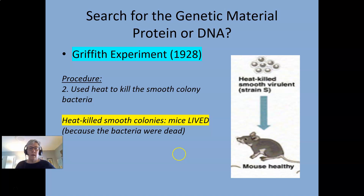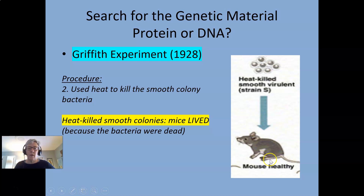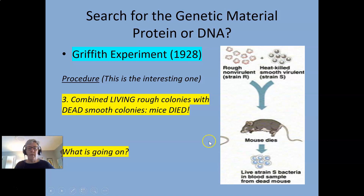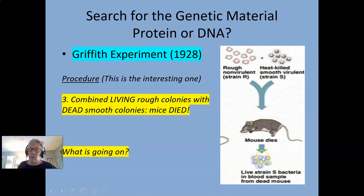Then he heat-killed the S strain — he heated it up, which generally is going to denature proteins — and infected it into the mouse, and the mouse lived. So whatever he did by heating it seems to have removed the virulent properties. Normally the S strain caused the mice to die, but if he heat-killed that S strain, the mice lived — the bacteria were dead. But then, this is the good one: he mixed them together. He mixed the rough strain, which alone does not cause the mice to die, and the heat-killed S strain, which also alone does not cause the mice to die, and the mouse died. Something is going on, because neither of these alone caused the mice to die. He isolated blood from that dead mouse and found living S bacteria in there — he could culture the S strain from that mouse.